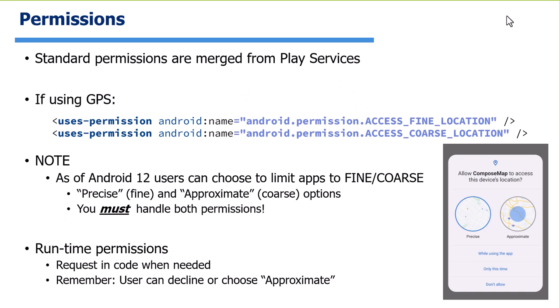After you have your key, you need to handle permissions. Inside your manifest, you add uses-permission tags that tell which permissions your app wants. Some permissions are considered dangerous - ones that might expose user personally identifiable information or PII. Location is a good example; where the user currently is is sensitive information, so it's a dangerous permission.